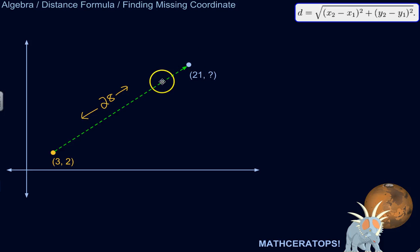Alright, so if I have two points on a coordinate plane like this, I can figure out the distance between them, the straight line distance between them, using the distance formula.